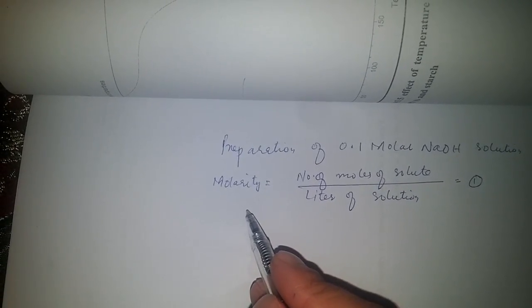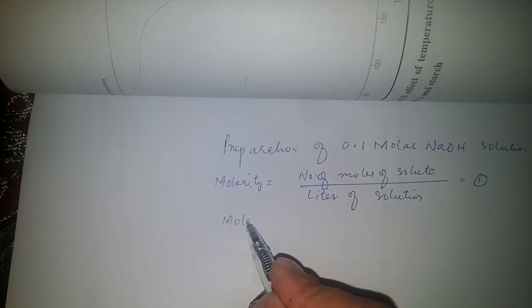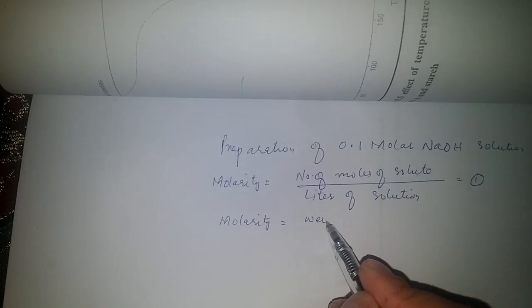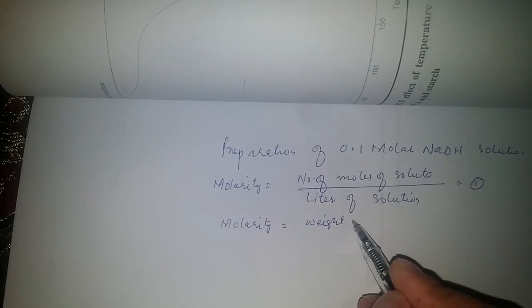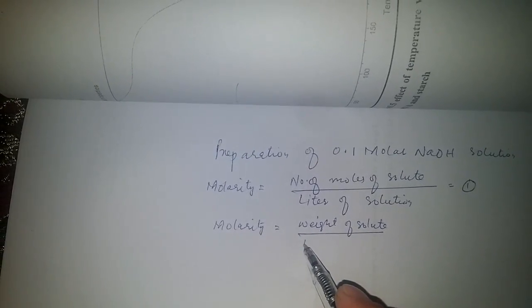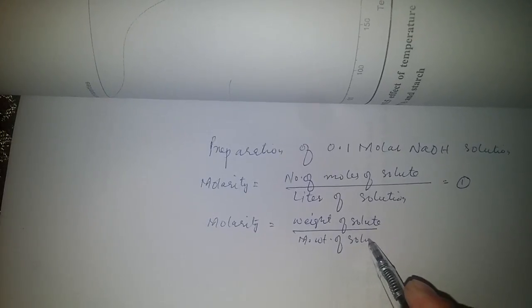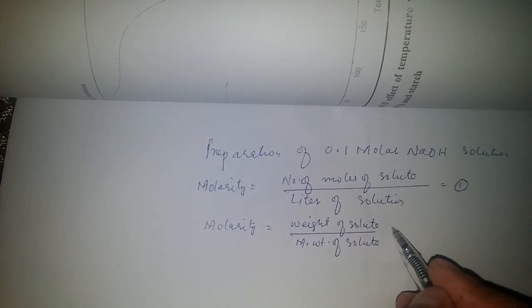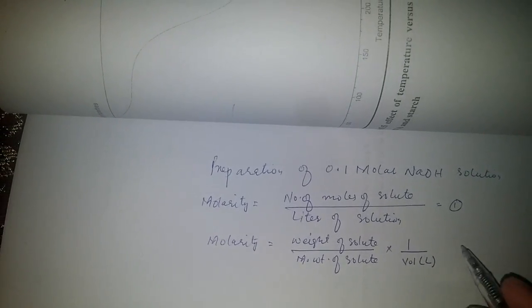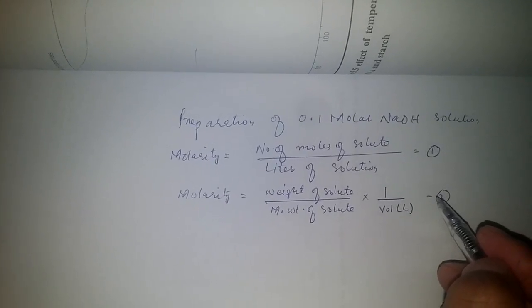We can also write this equation in this version as well. Molarity equals weight of solute divided by molecular weight of solute times one over volume in liter. This is the right version for us because we can calculate the weight of the solute that is to be dissolved in 1000 ml to prepare 0.1 molar NaOH solution.